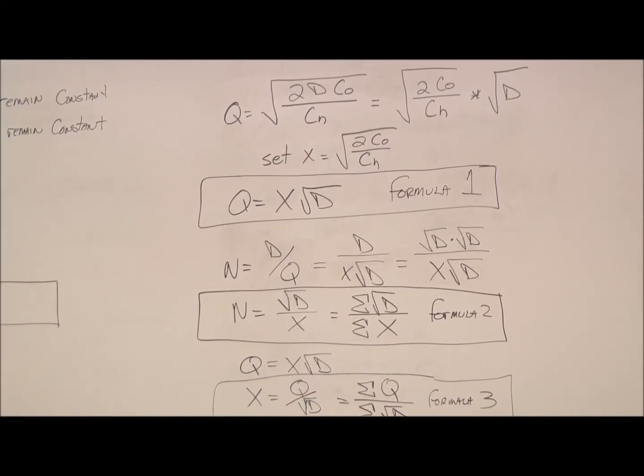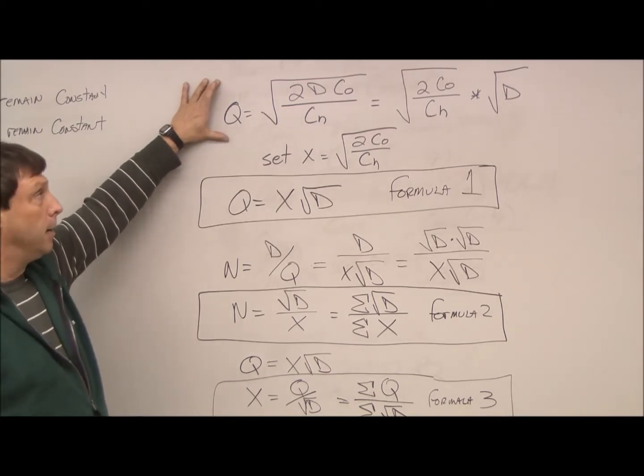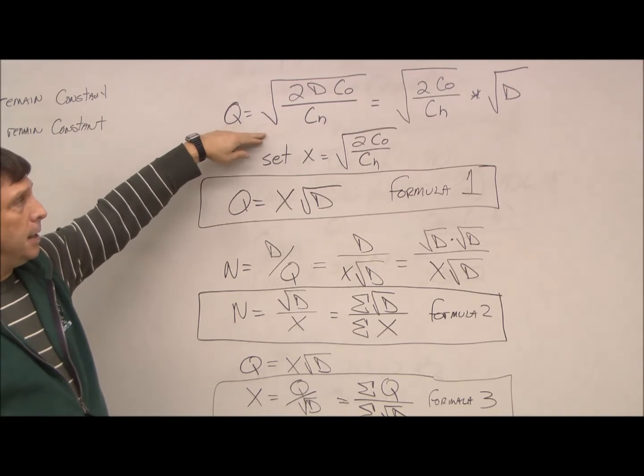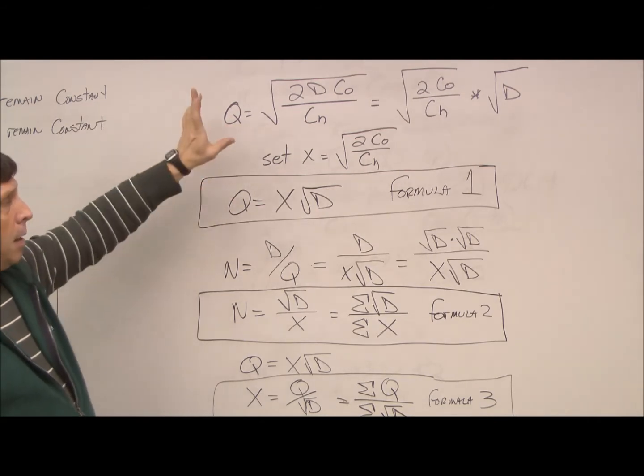Alright. So mathematically, what this model looks like is we start out with the basic EOQ model, that Q equals 2DCO divided by CH, take the square root. But remember, we don't have costing information for our ordering cost or our holding cost per unit.